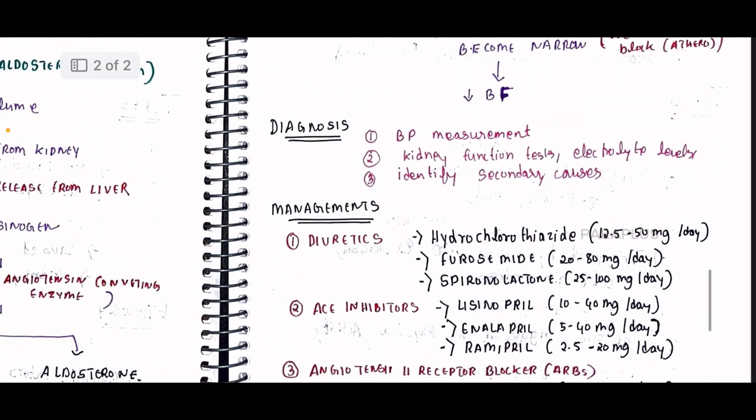For diagnosis, there is blood pressure measurement — that is systolic and diastolic. We will test for kidney function — that is for secondary hypertension as a condition — and we will also check electrolyte levels.